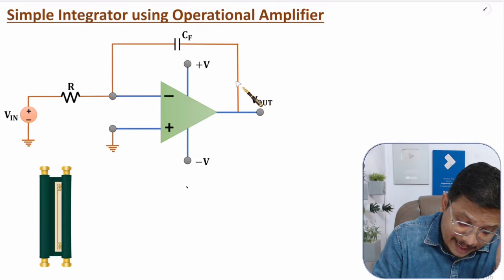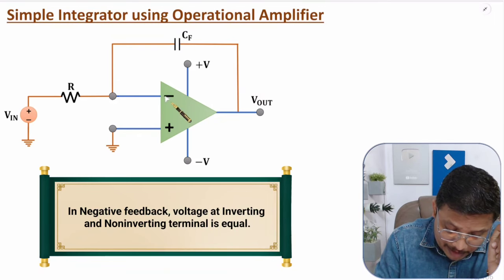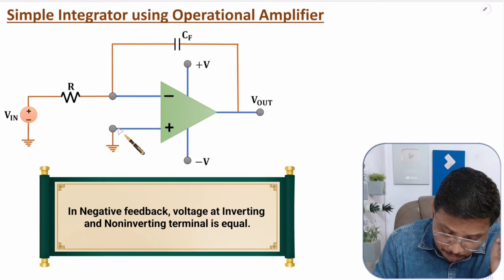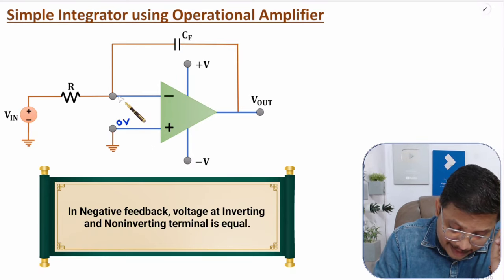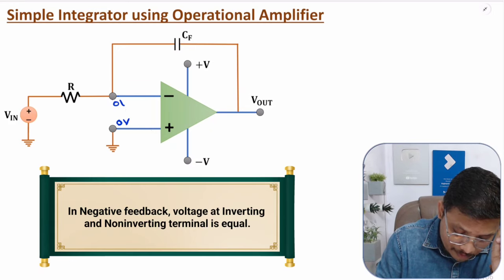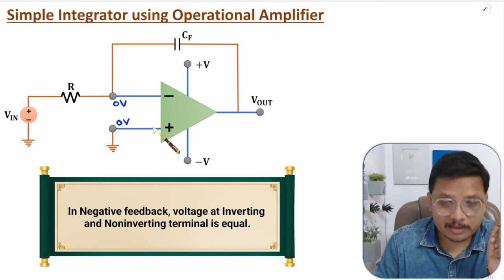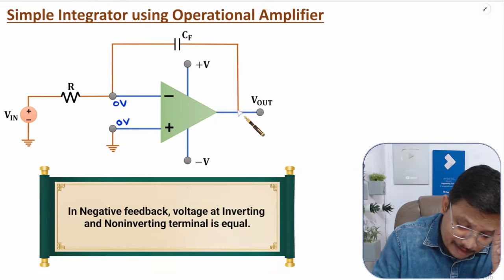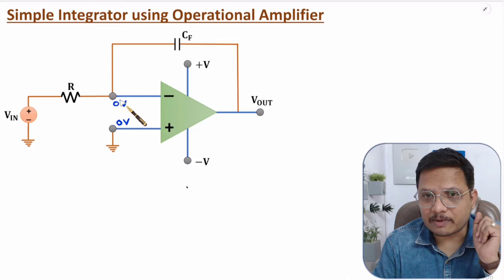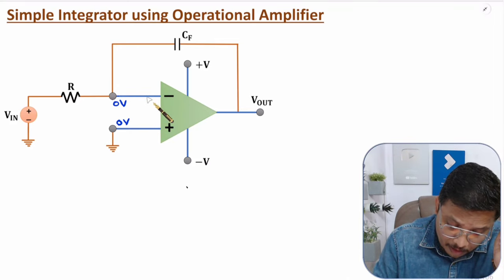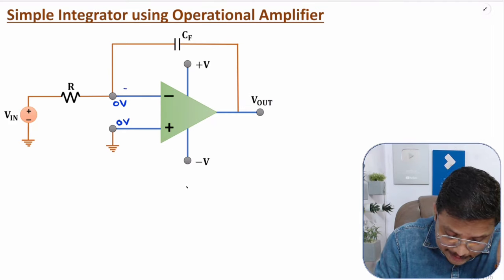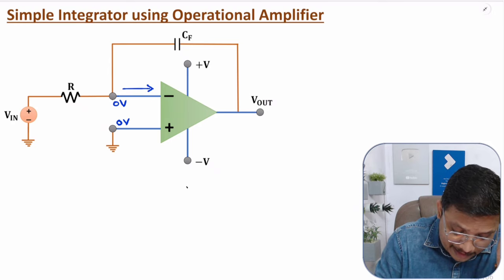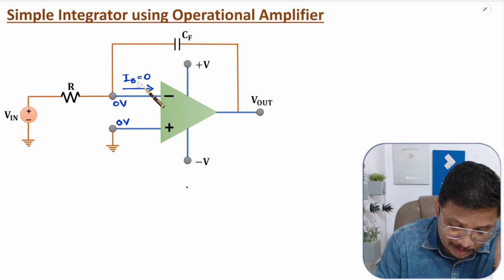In negative feedback, the potential at the negative terminal and positive terminal is the same. Here, with the positive terminal, the potential is zero voltage. So at the negative terminal also, the potential will be zero — that is the virtual ground concept, which is applicable in negative feedback. One more basic: the input impedance of the op-amp is very high, so the current going inside is negligible — you can say it is zero. If the current over here is Ib, then that is negligible or zero.